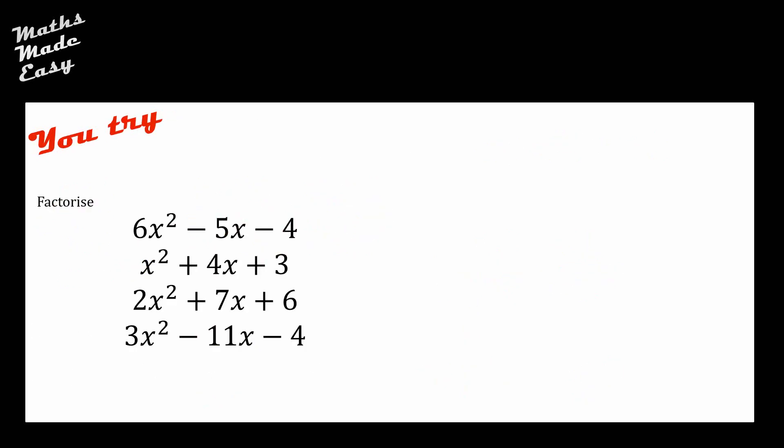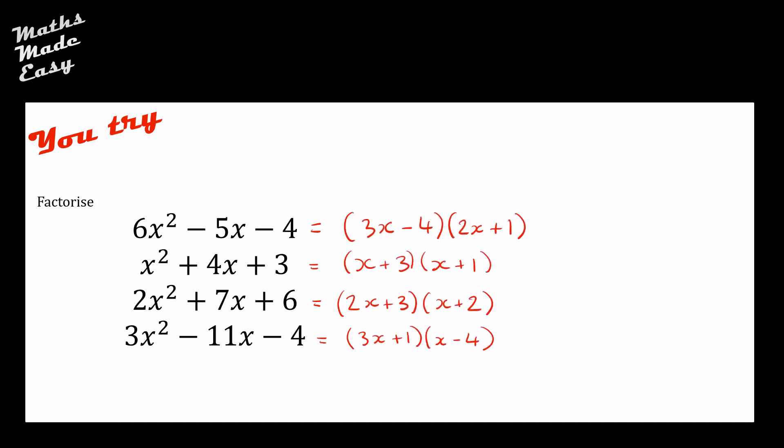Here are four problems for you to try. When you hit play I'll show the answers, as the working takes up a lot of room. Three are the more complicated type, and the second one has a coefficient of 1 in front of the x², so that's a bit easier. Stick to the method, rewind if needed, pause now and try them. The solutions are now on screen — really well done if you got all four. If you struggled, rewind and watch the examples again before trying them yourself.